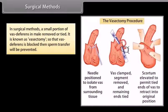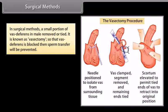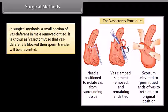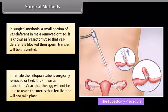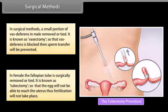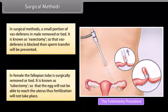In surgical methods, a small portion of the vas deferens in the male is removed or tied — this is known as vasectomy — so that sperm transfer is prevented. In females, the fallopian tube is surgically removed or tied — known as tubectomy — so that the egg will not be able to reach the uterus and fertilization will not take place.